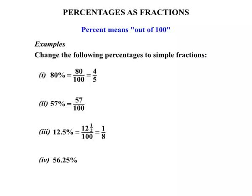Now 56.25%, write that as a simple fraction. Well, 56 and a quarter is the same as 56.25. It's a percent, so we put it over 100. Now it's a similar question to the one above it.